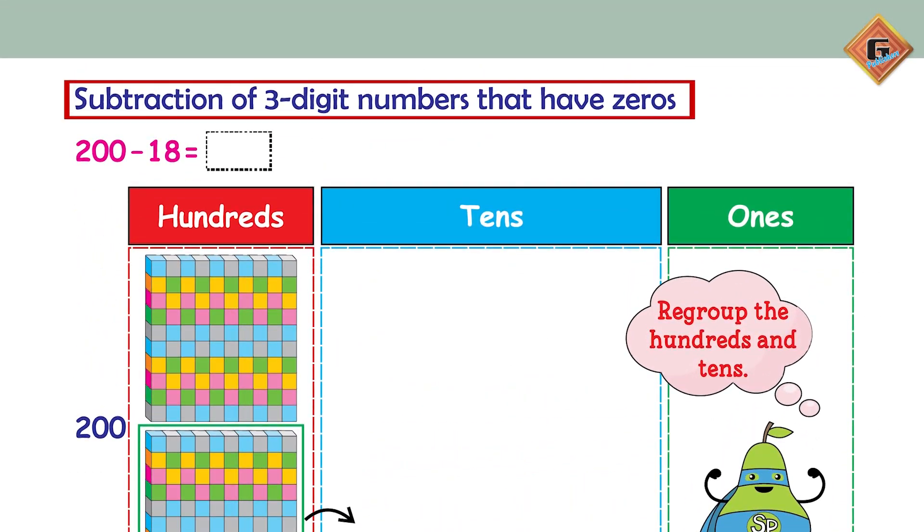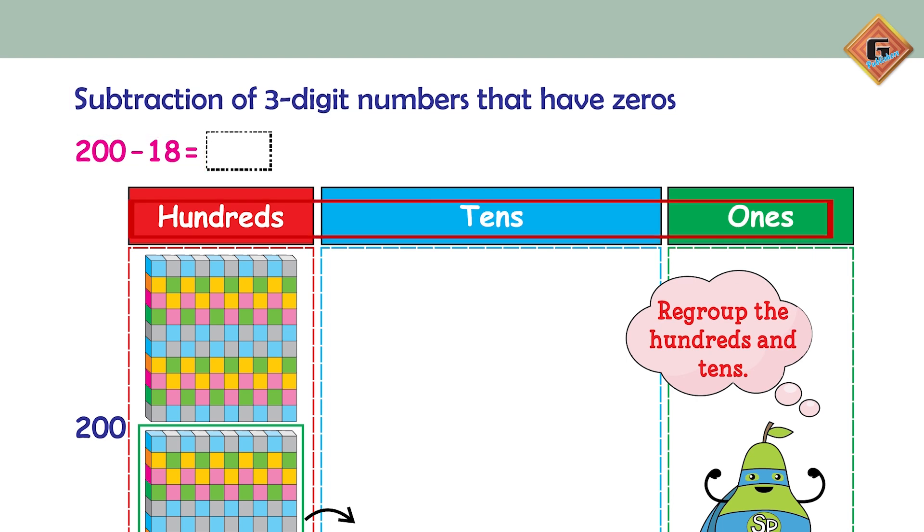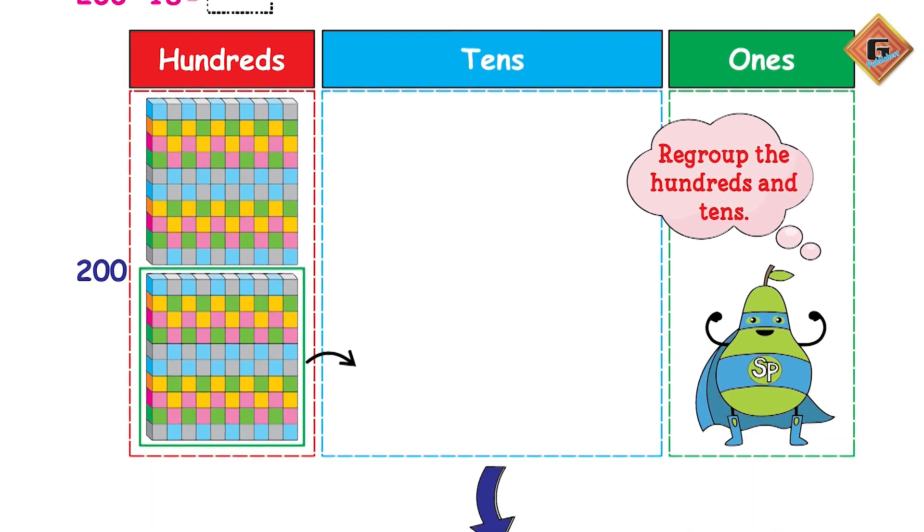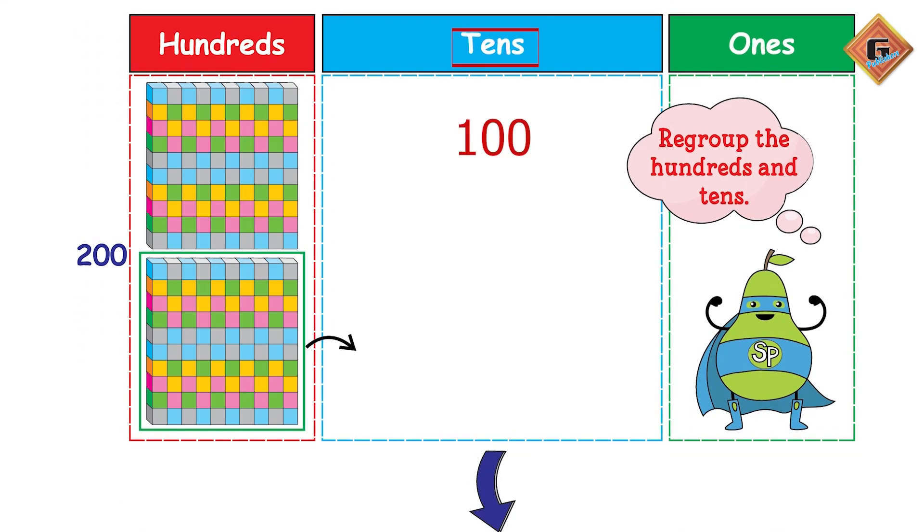Now move to page 70: subtraction of three-digit numbers that have zeros. 200 minus 18. To subtract 18 from 200, we have to first regroup the hundreds and tens.